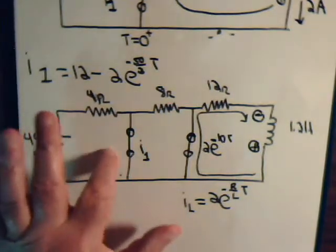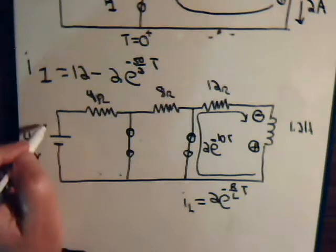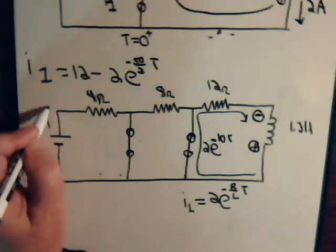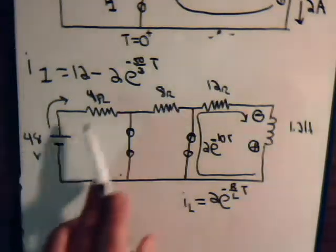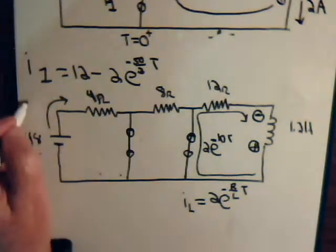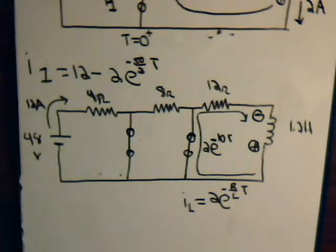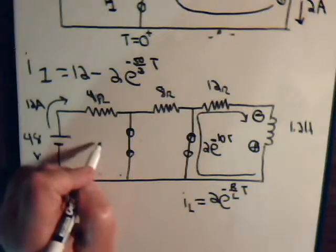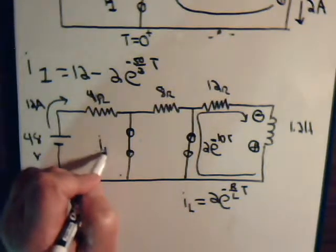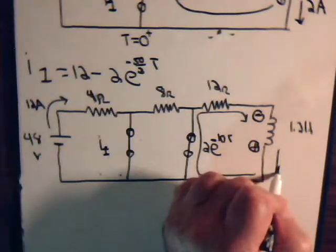The correct way of thinking about this is: here's a battery, so the battery puts out a supply current that is equal to 12 amps. But in this single circuit, this 12 amps consists of the I1 plus the IL.